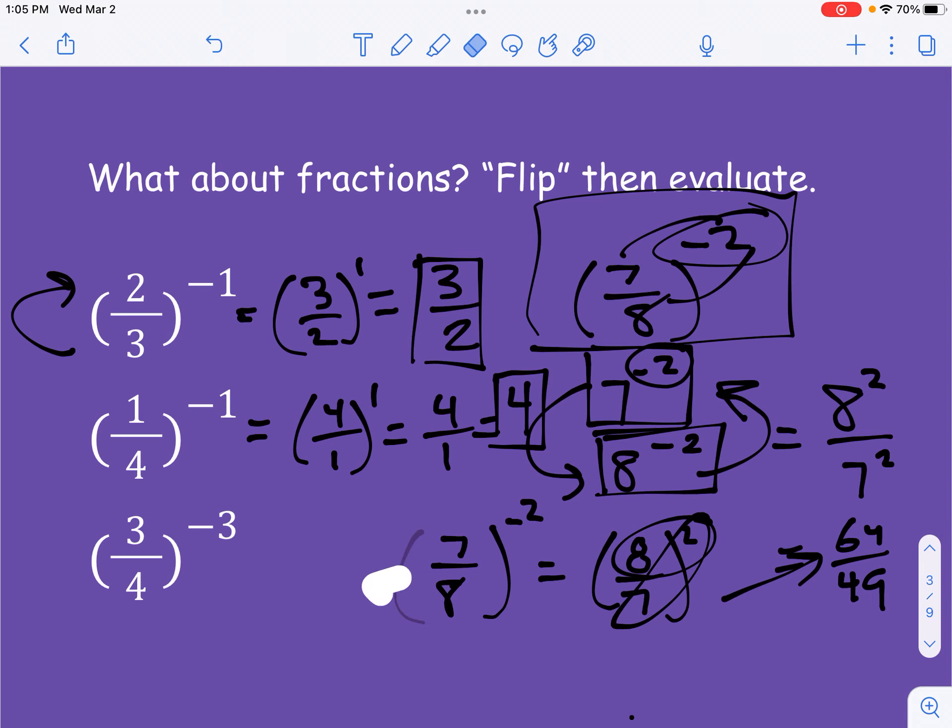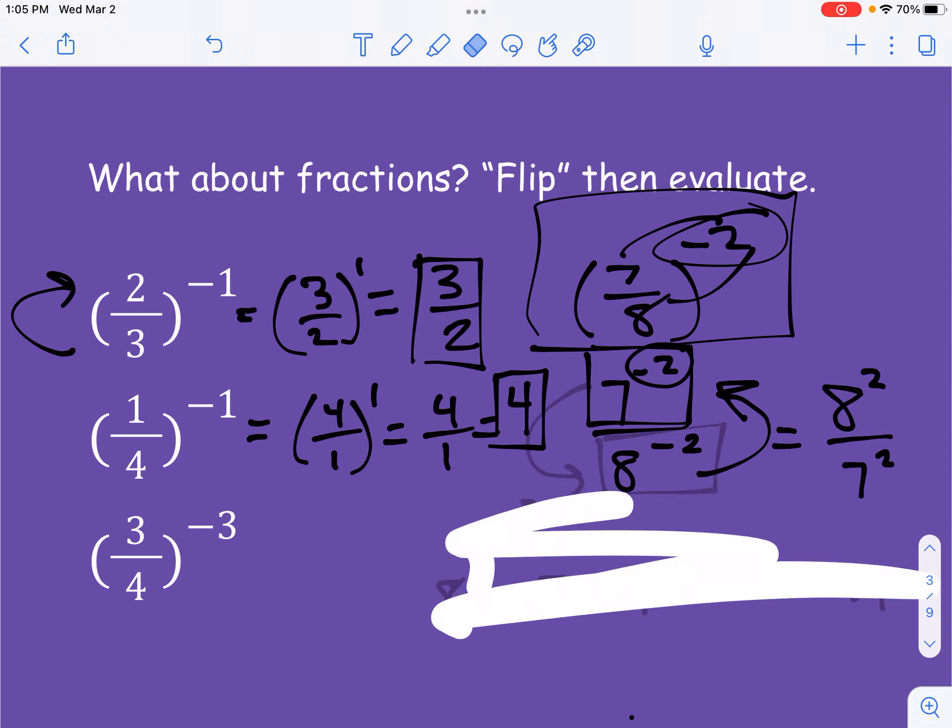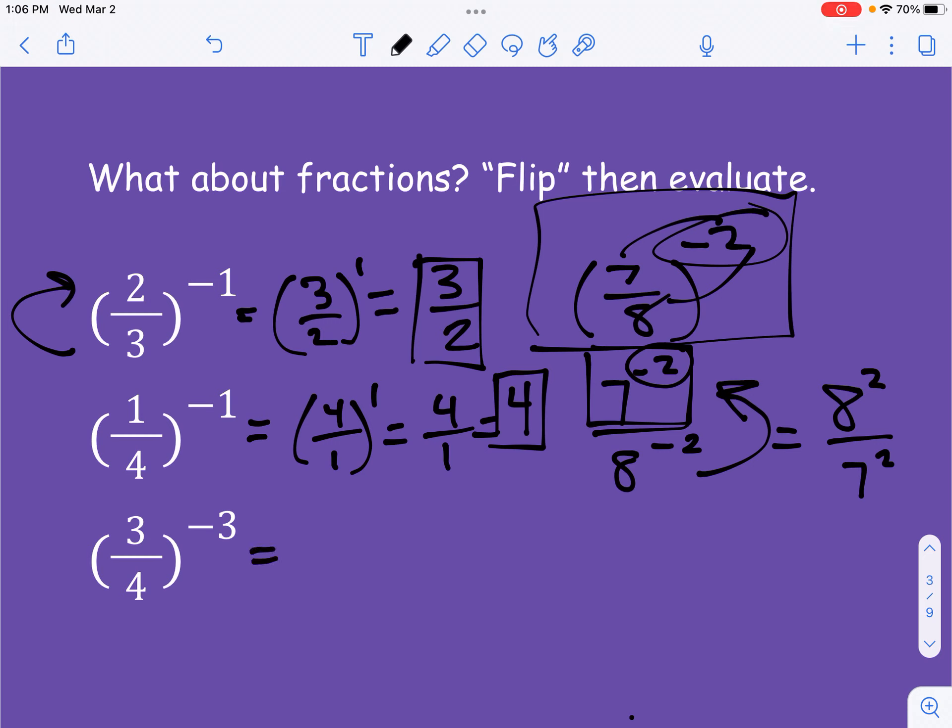Here's one that's going to require a little more thought. 3 4ths to the negative 3. Well, first of all, let's flip this thing. So we have 4 3rds to the now positive 3 power. So this is going to be 4 to the 3rd over 3 to the 3rd. Well, 4 to the 3rd is this, and 3 to the 3rd is this. And if you already know this, then good for you. But you have 64 over 27.